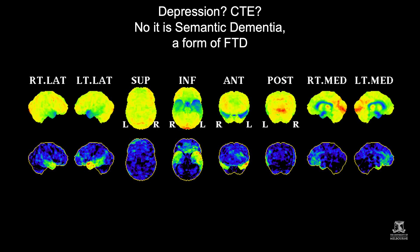This is a case of a male in his early 50s, a former footballer with multiple concussions, in whom chronic traumatic encephalopathy was suspected. The FDG-PET showed severe bilateral temporal hypometabolism, and this is a classic finding of the semantic dementia form of frontotemporal dementia.